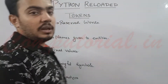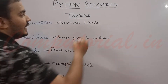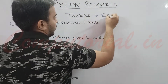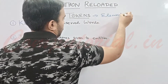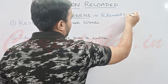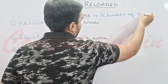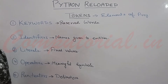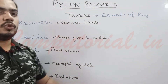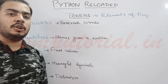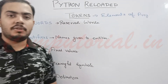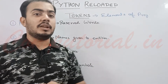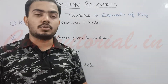In easy words, tokens are elements of our program. These are those individual objects with the help of which you will write all your programs. So whatever you are writing in your code, everything is made up of tokens only.